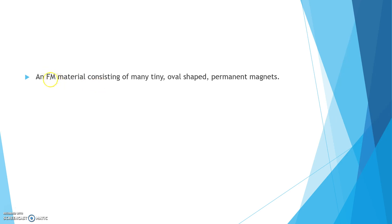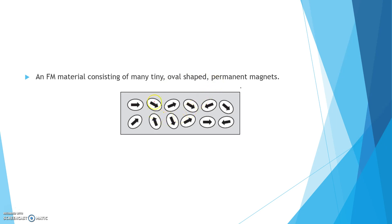Any ferromagnetic material — FM in short, don't confuse this with frequency modulation in communication systems — consists of many tiny oval-shaped permanent magnets. Any ferromagnetic material is made up of small tiny magnets which are oval shaped, and these tiny magnets are arranged randomly. Their direction of magnetization, or the magnetic field produced by the small permanent magnets, is in a random direction. As a result, the overall magnetic field produced by the ferromagnetic material is zero.